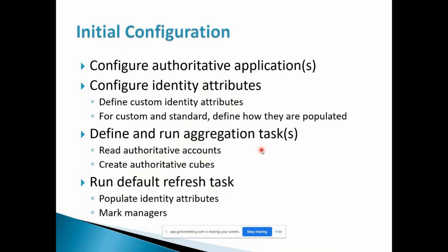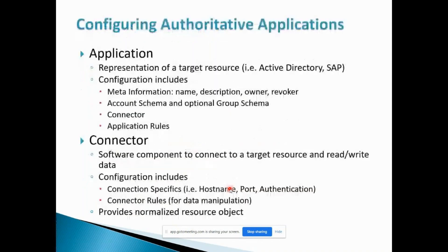Next we need to run the default refresh task. There is a refresh task that we run after the aggregation task to populate the identity attributes and mark the managers. When the identity is created through this process, it has basic directly-mapped data, but calculated data — like calculating something based on an application attribute or marking a manager for a user — requires the refresh task. Once we run it, the identity is created in the system.